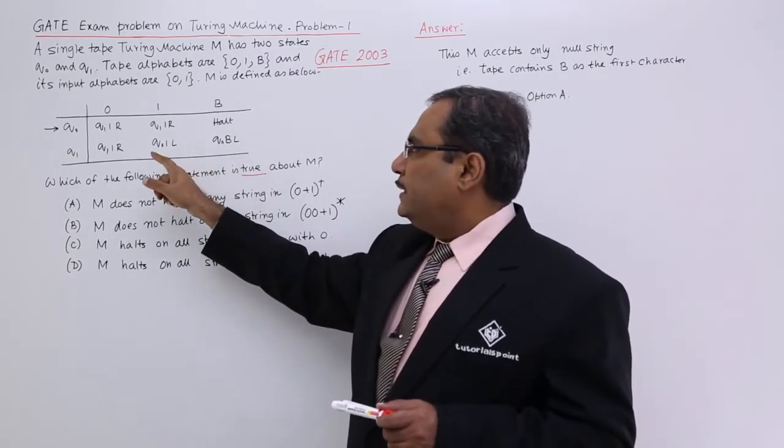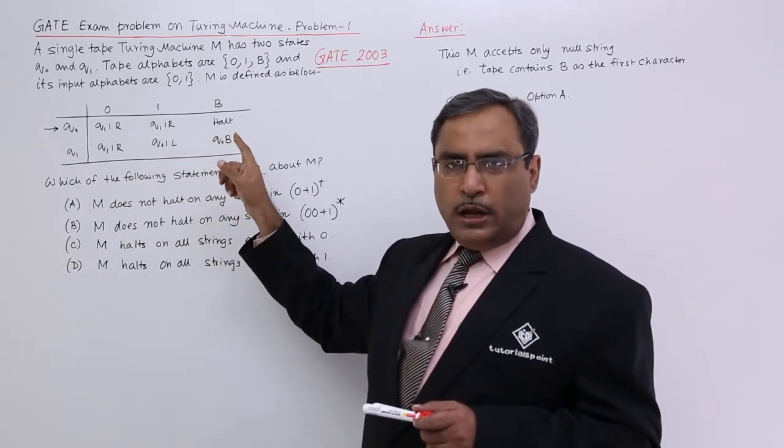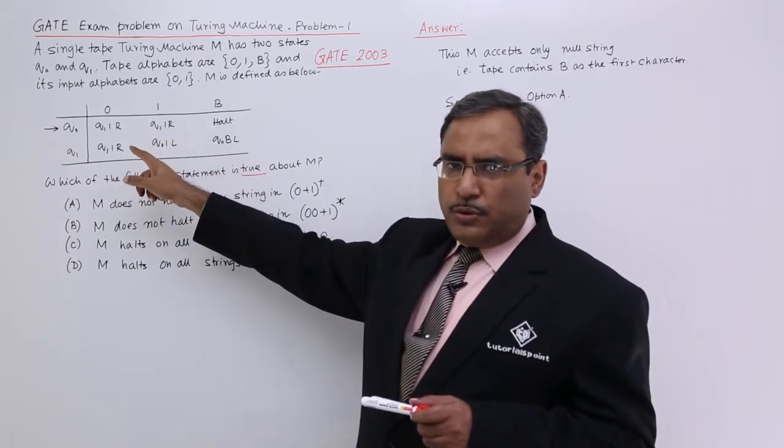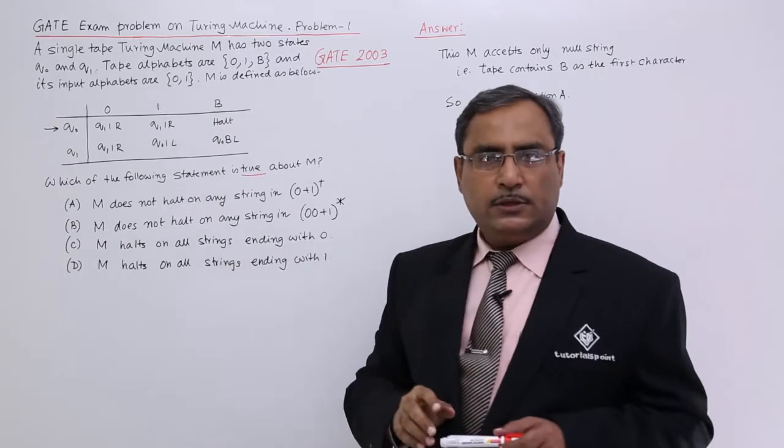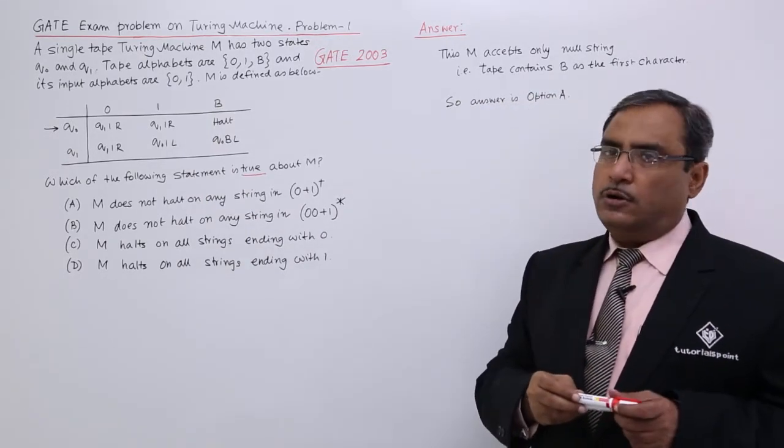Now the thing is that the machine, this particular Turing machine M, is halting only when we are at the state Q0 and the tape symbol is B. That is in that case only, and otherwise it will not halt.